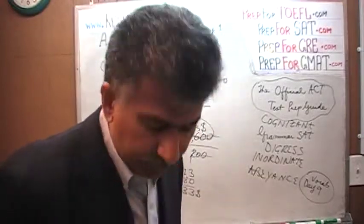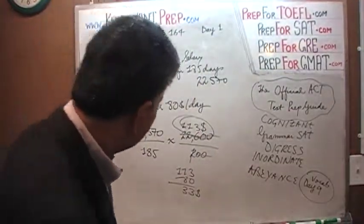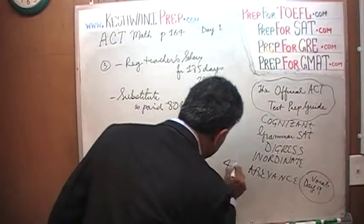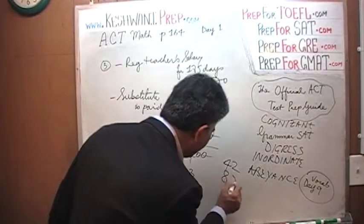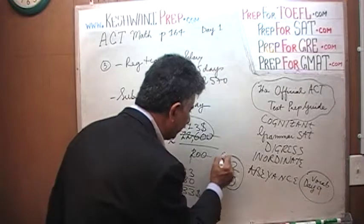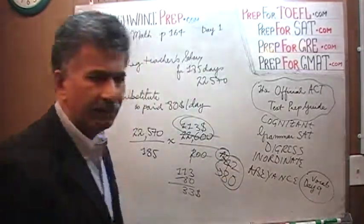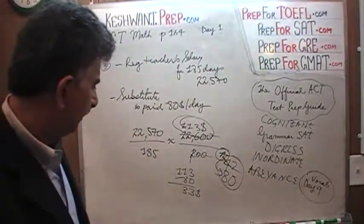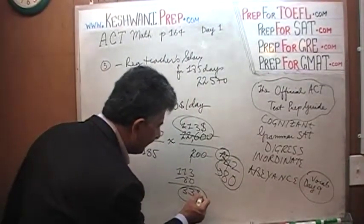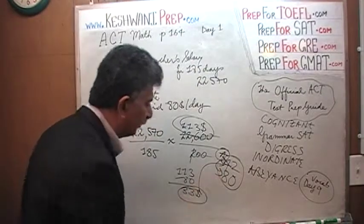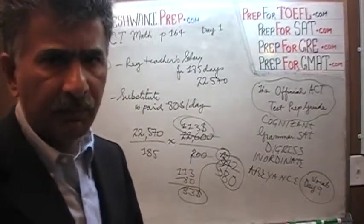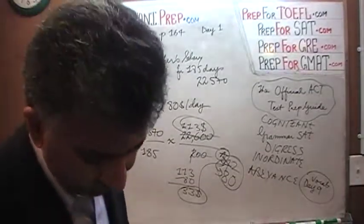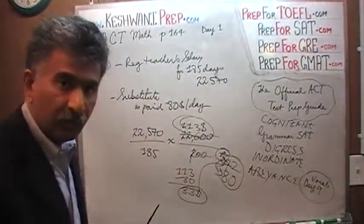Here, the first answer choice is $42, and then it jumps all the way up to $80. Our estimate of $33 was an underestimation, and $42 fits right in our expected range of $35–40. The answer is A.